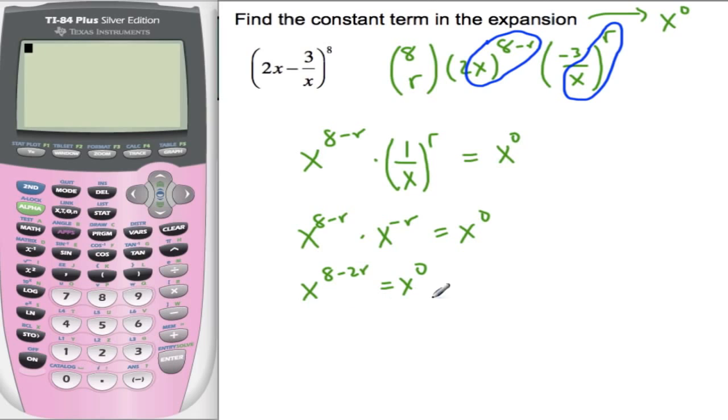And now if these two pieces are equal, then their exponents must be equal. So I'll just get rid of the x's. So 8 minus 2r equals 0. So r must be 4, which sort of makes sense because these powers need to be split in half. So I have x to the 4th and divide x to the 4th for everything to go away.